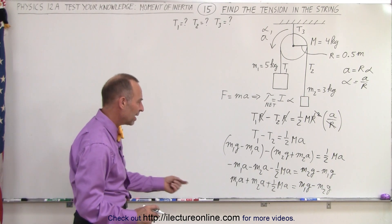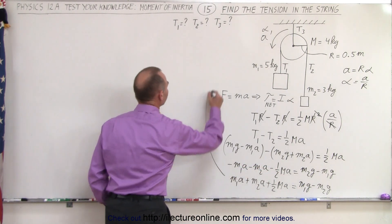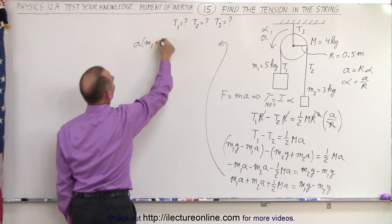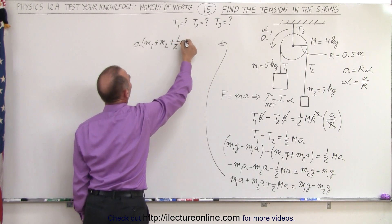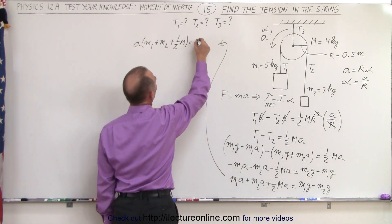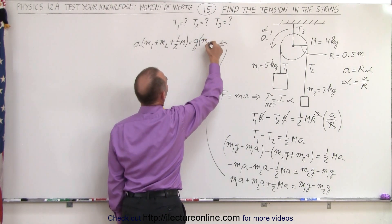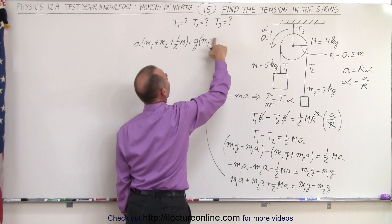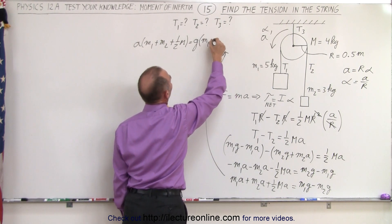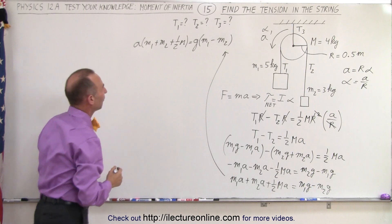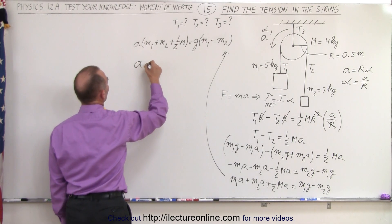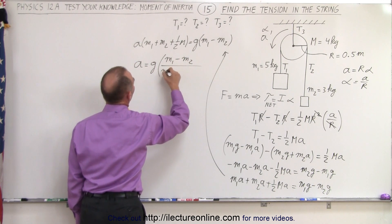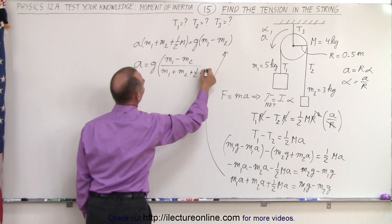We can factor out an a on the left and a g on the right. On the left side we get a times (m1 + m2 + ½M), and on the right side we get g times (m1 - m2).